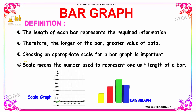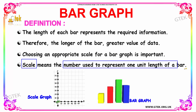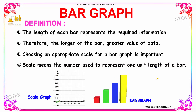Scale is the term used to represent the number of one unit length in a bar graph. So here, if you see, one unit length represents 10, and henceforth the units will be multiples of 10: 20, 30, 40, 50, 60, and 70. This is how you have to set the scale for a bar graph.